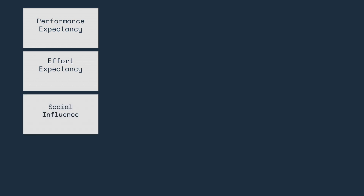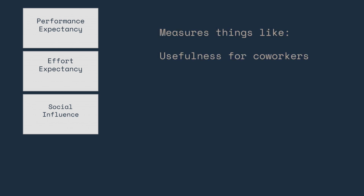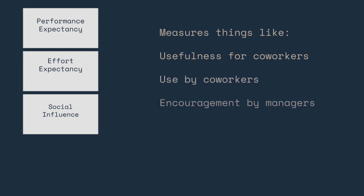Social Influence: the degree to which an individual perceives others believe he or she should use the new system. Measures things like usefulness for co-workers, use by co-workers, and encouragement by managers.